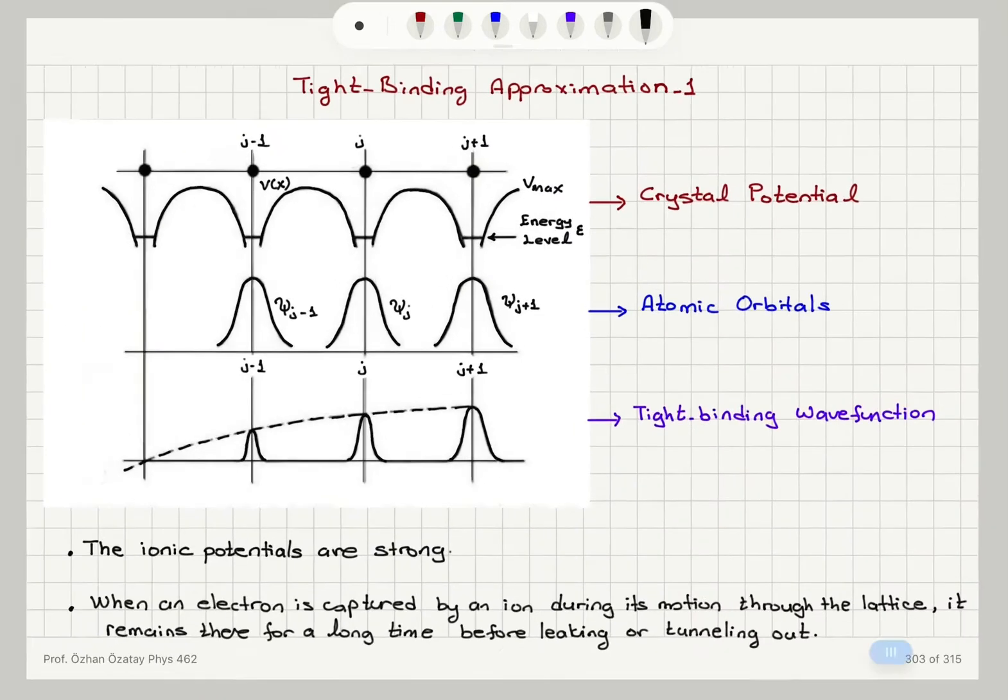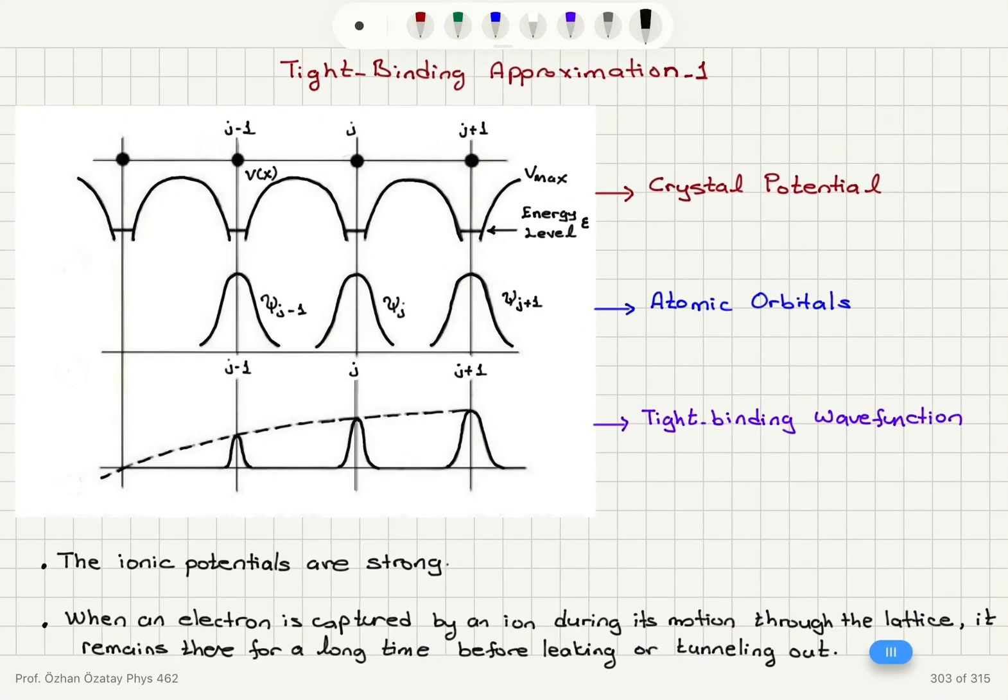And in the tight binding approximation, these atomic orbitals will be replaced by a tight binding wave function which will be in the Bloch form. So the effect of the ionic potentials will be to modify these wave functions to have a Bloch form.